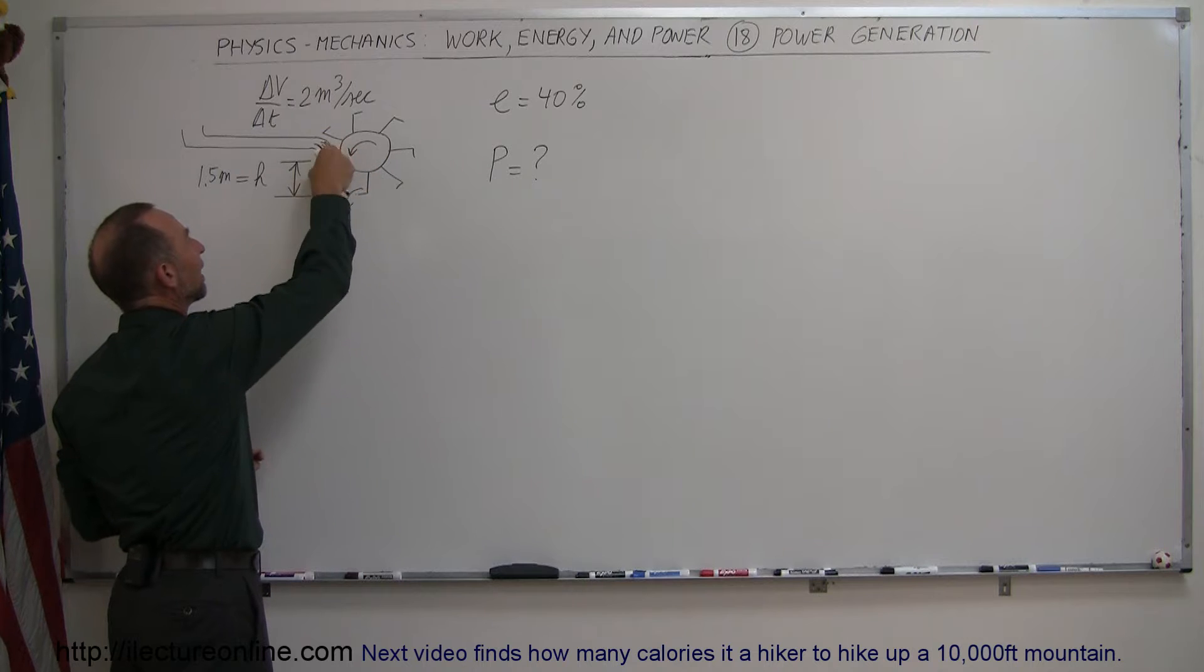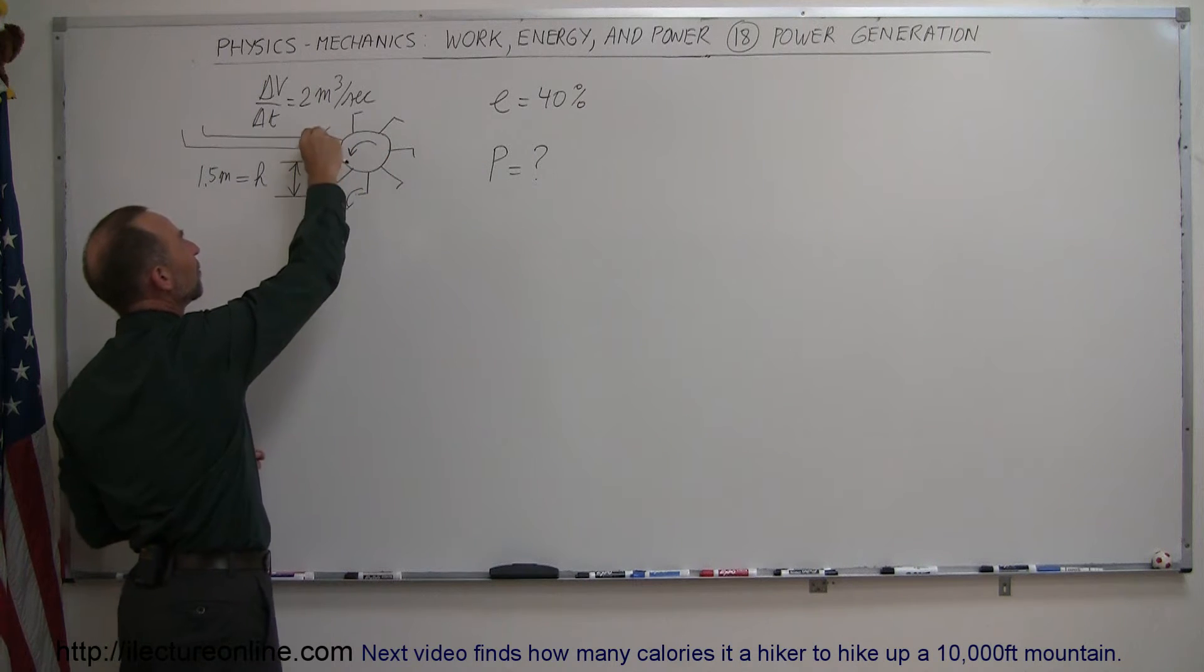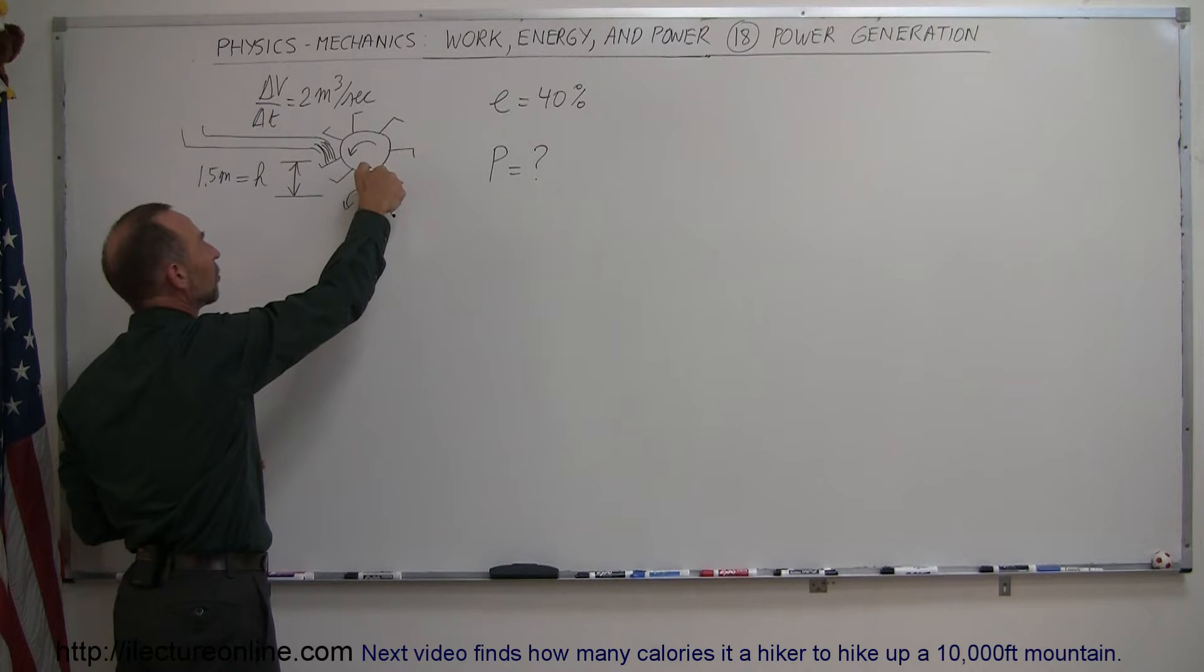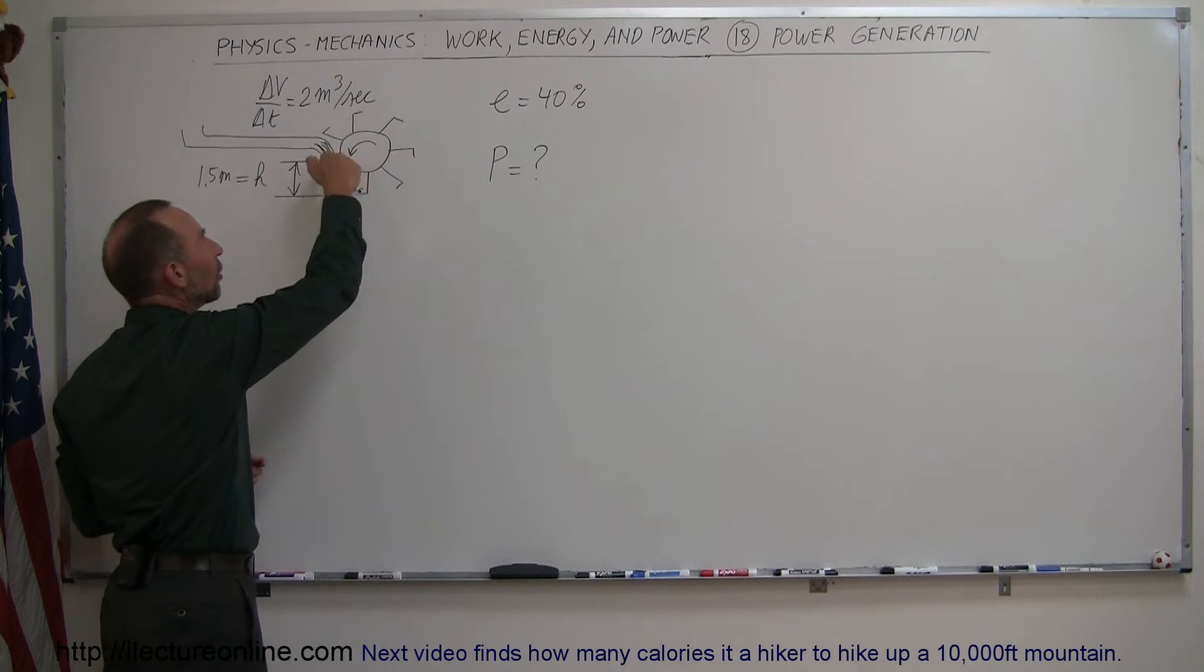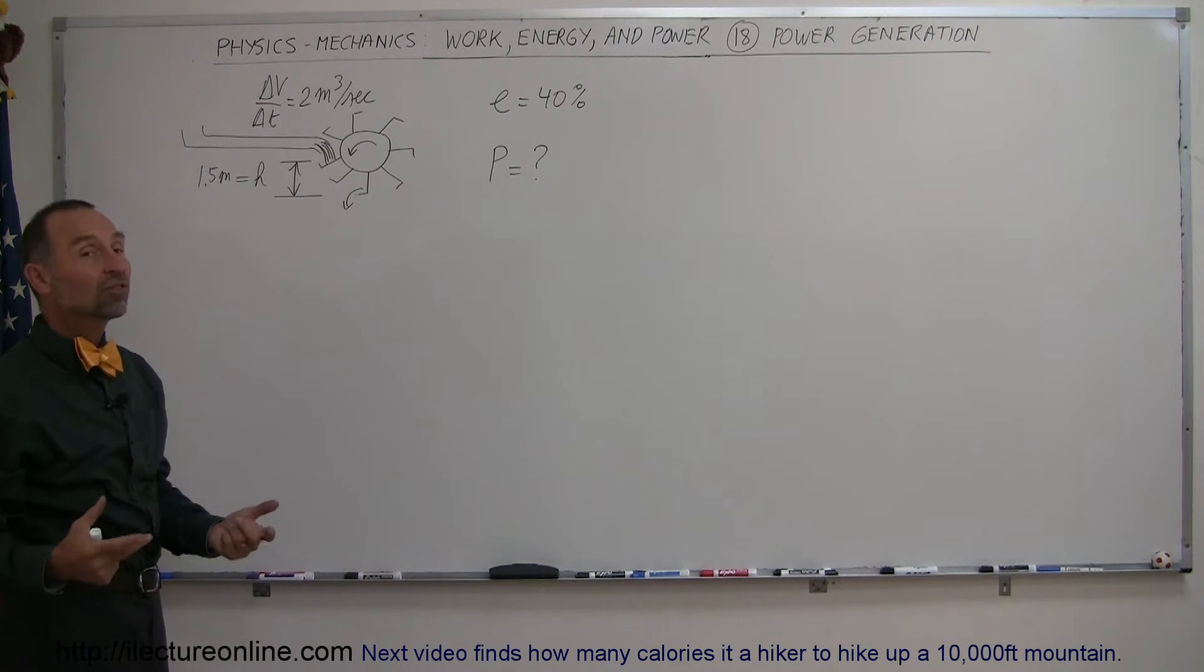And so let's say that this mechanism is about 40% efficient. It takes 40% of the potential energy of the water and converts it to electricity via this little water mill. How much power is generated?